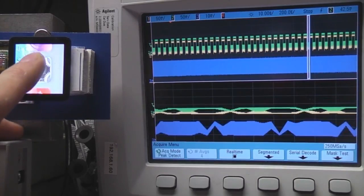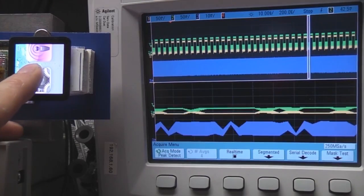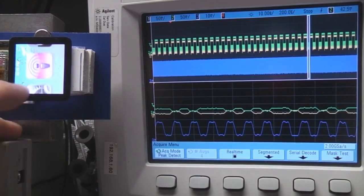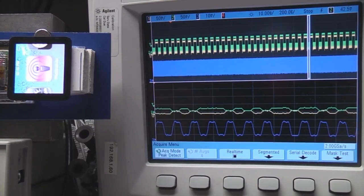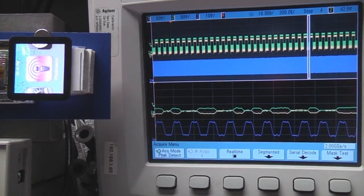So the way around that is simply if you do a single trigger, see we now get nice clean data, whereas if we do run and then stop, because it's doing this double buffering, it's only using half the available memory. So when you're doing things like this where you want to maximize the amount of memory, it's really good to have an understanding of how your scope uses the memory because that can make quite a big difference to how much information you can get out of it.